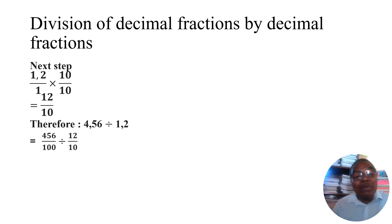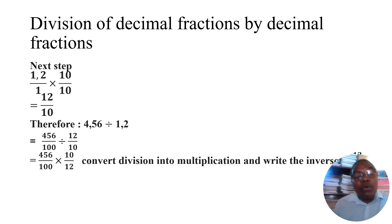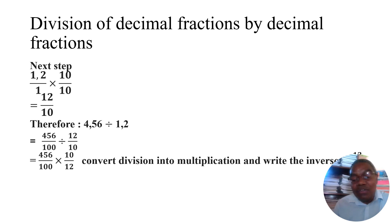Remember, 456 over 100 — there are two digits after the comma, so we divide by 100. Now, as we learned previously, when we have a division of fractions we convert it to multiplication and write the inverse of the value after the division sign. So we have 456 over 100 times 10 over 12. The answer is 3.8.